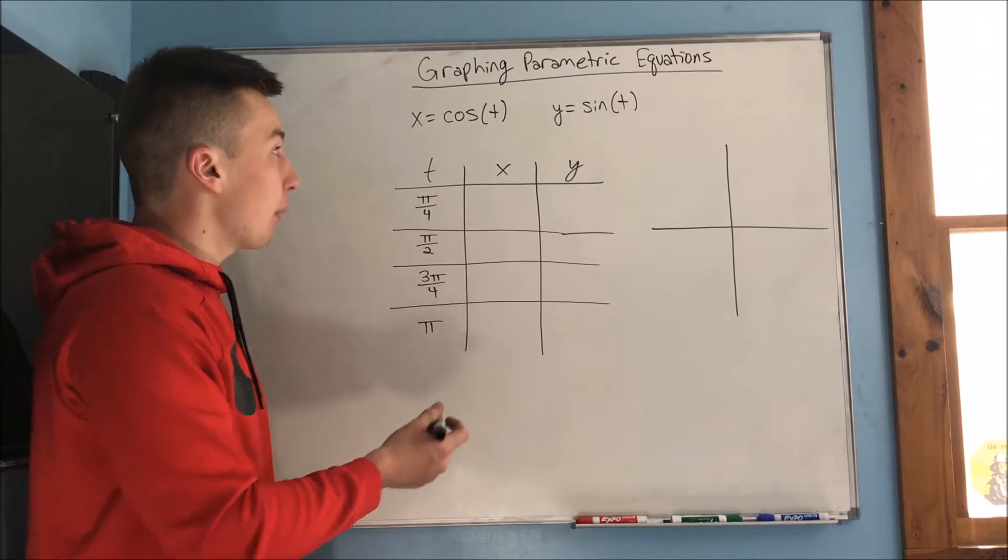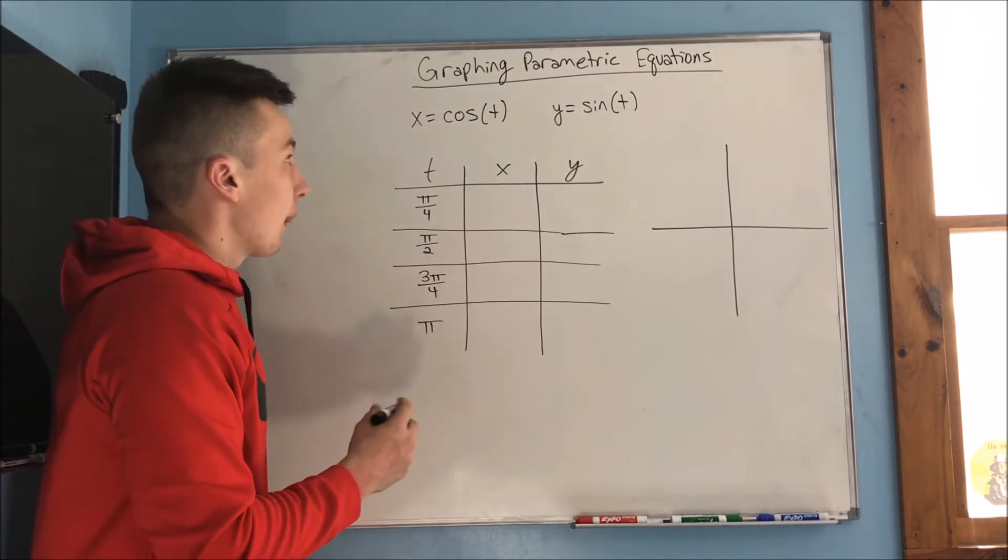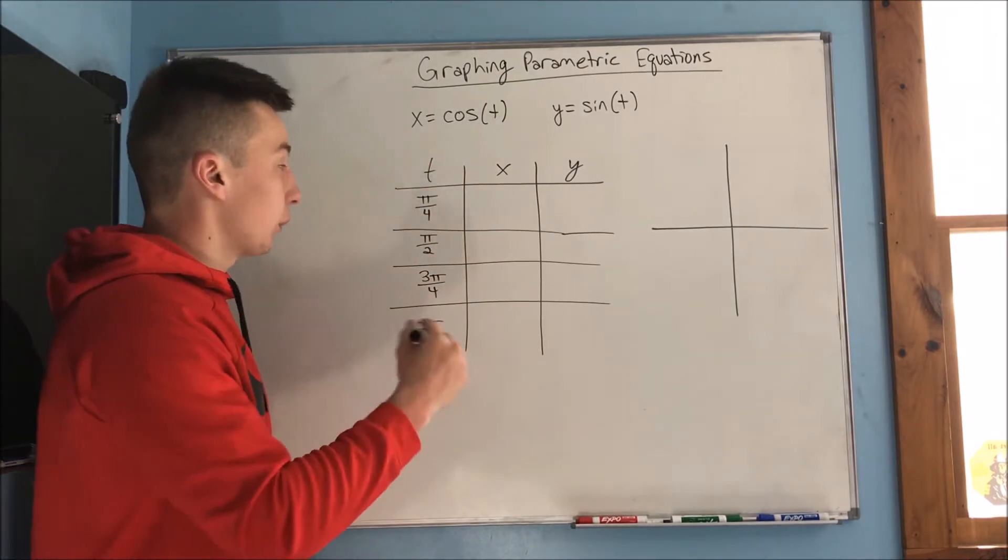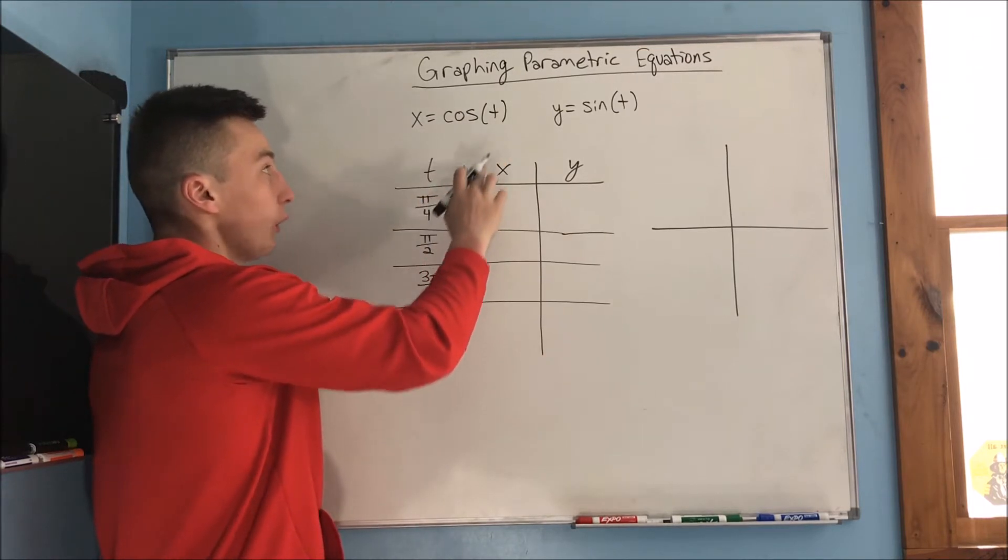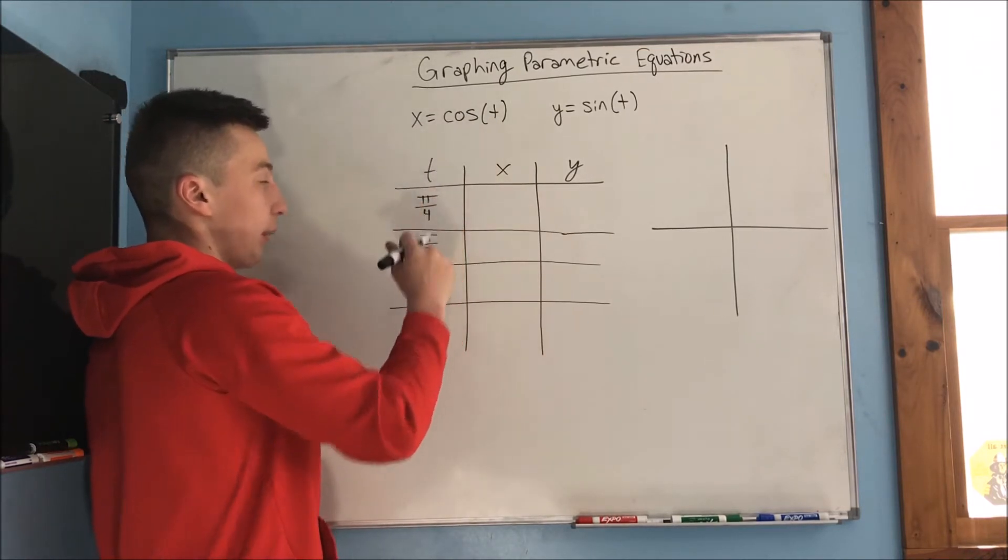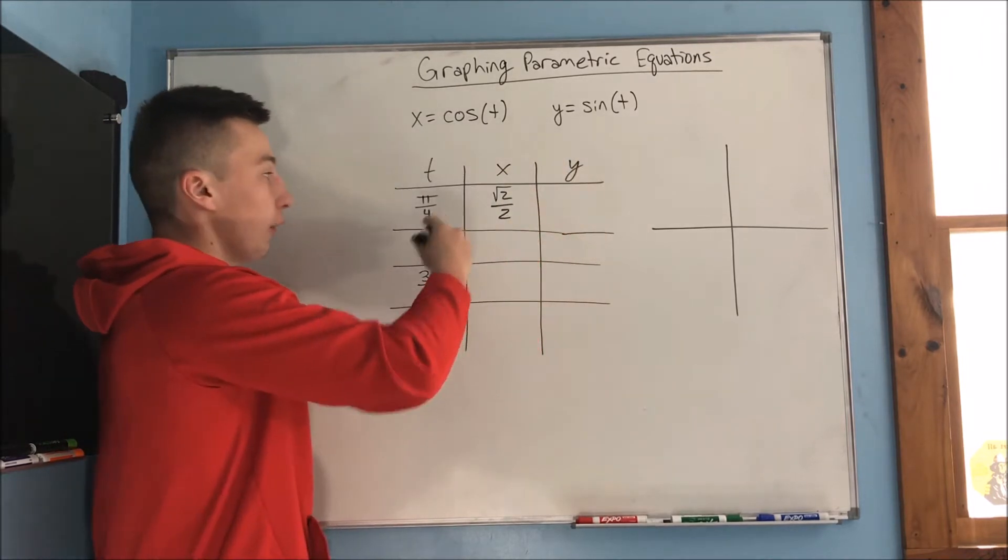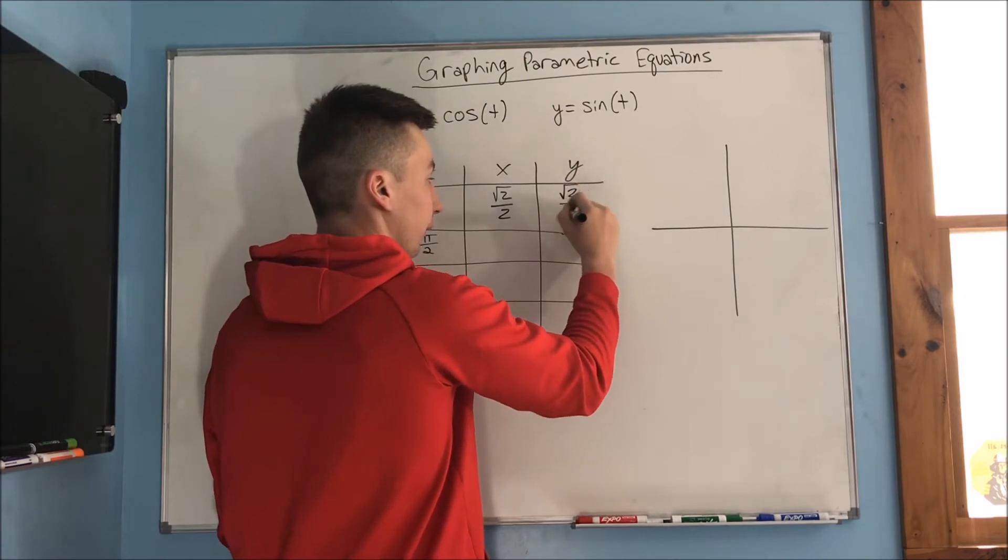So what happens when we plug in pi over 4 for cosine and sine? Well, the cosine of pi over 4 is just rad 2 over 2. So x is going to be rad 2 over 2 when t is pi over 4. And that's going to be the same thing for y because the sine of pi over 4 is also going to be rad 2 over 2.